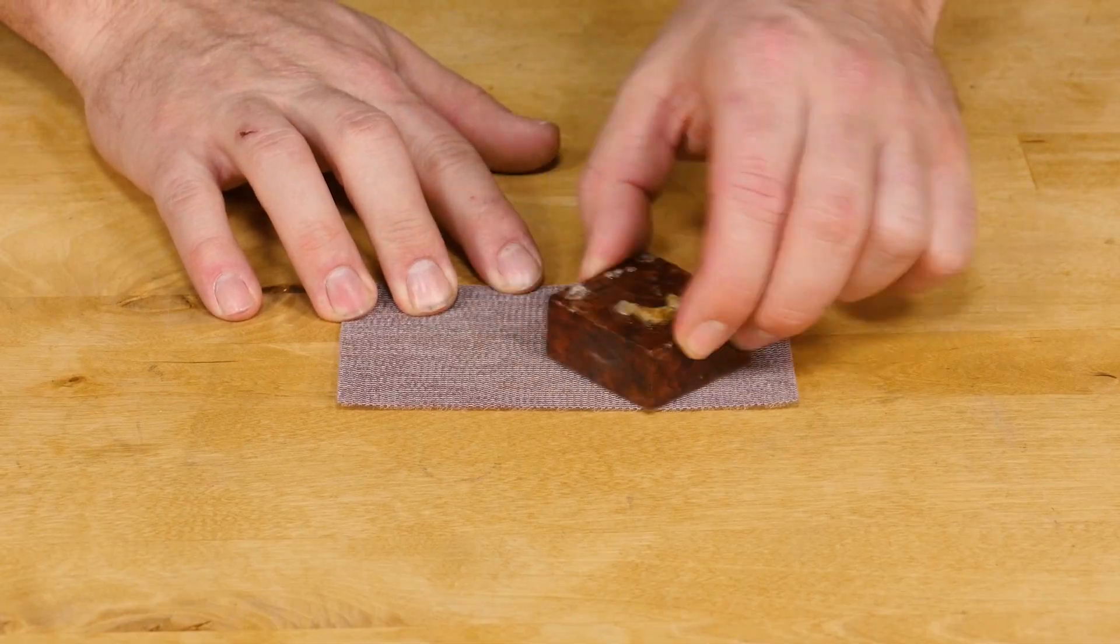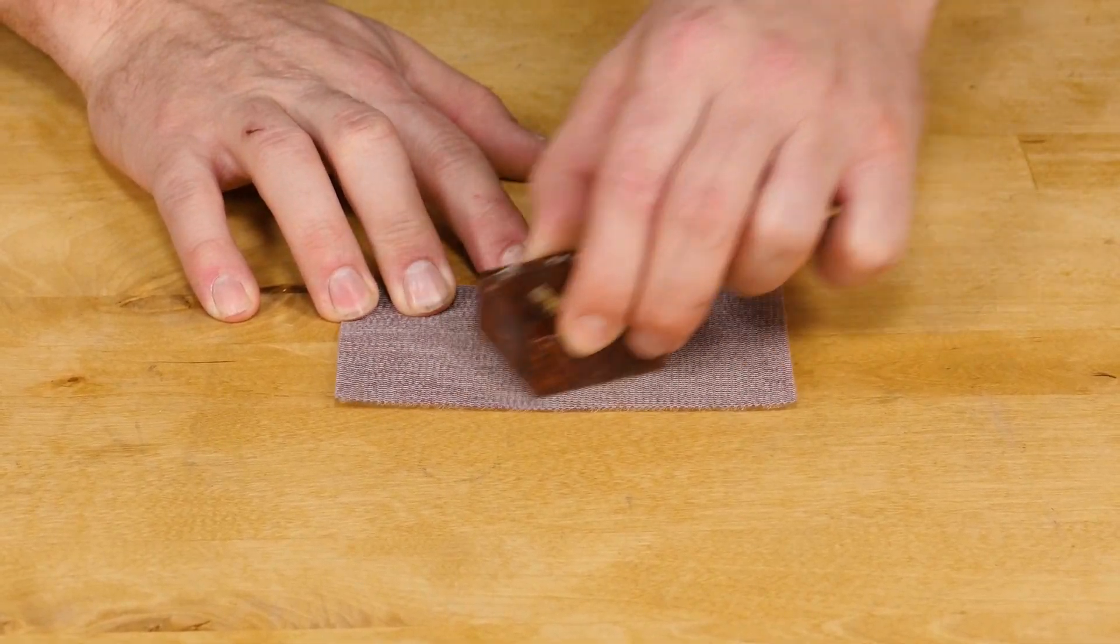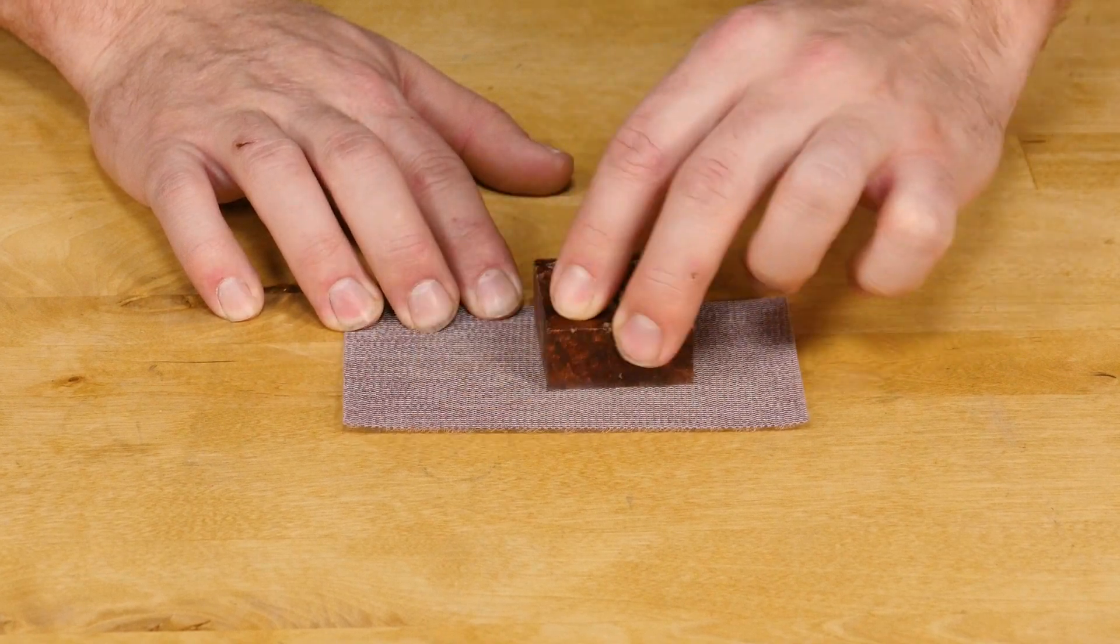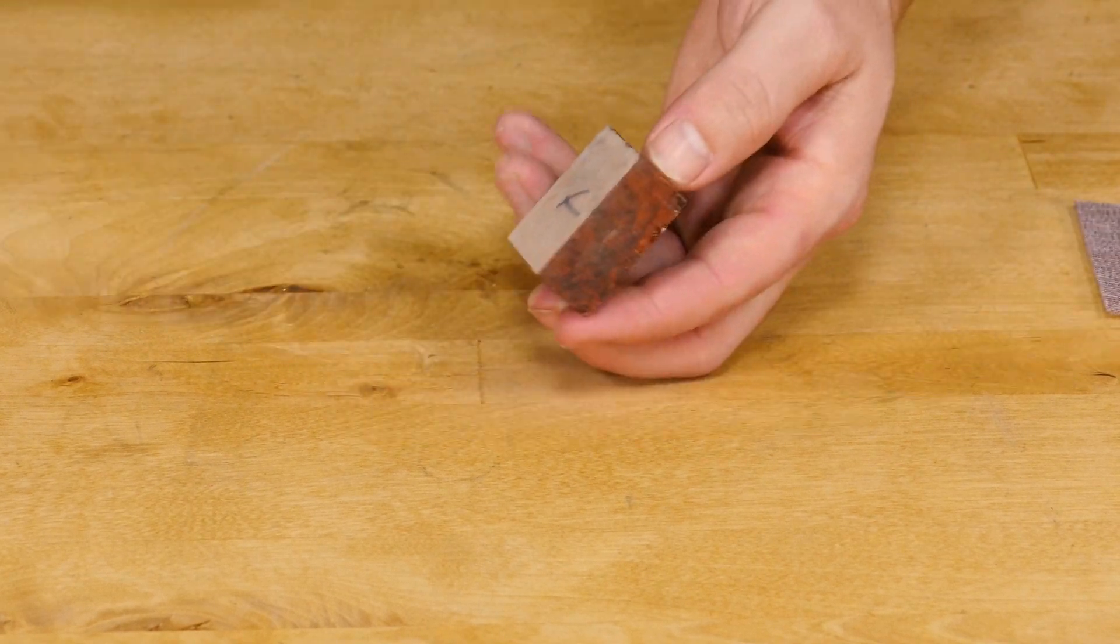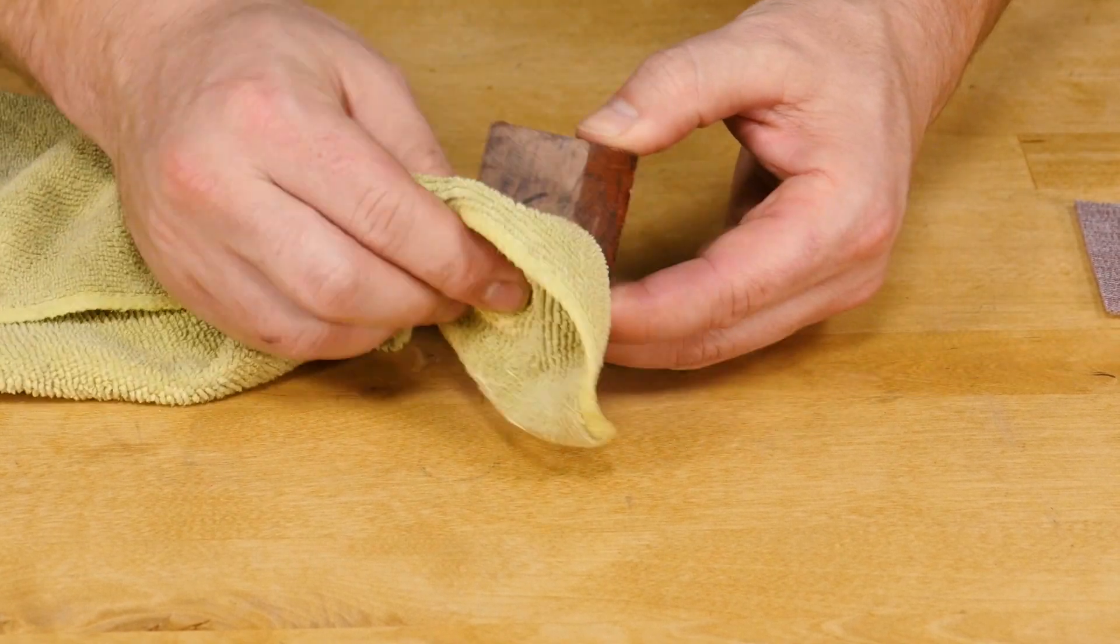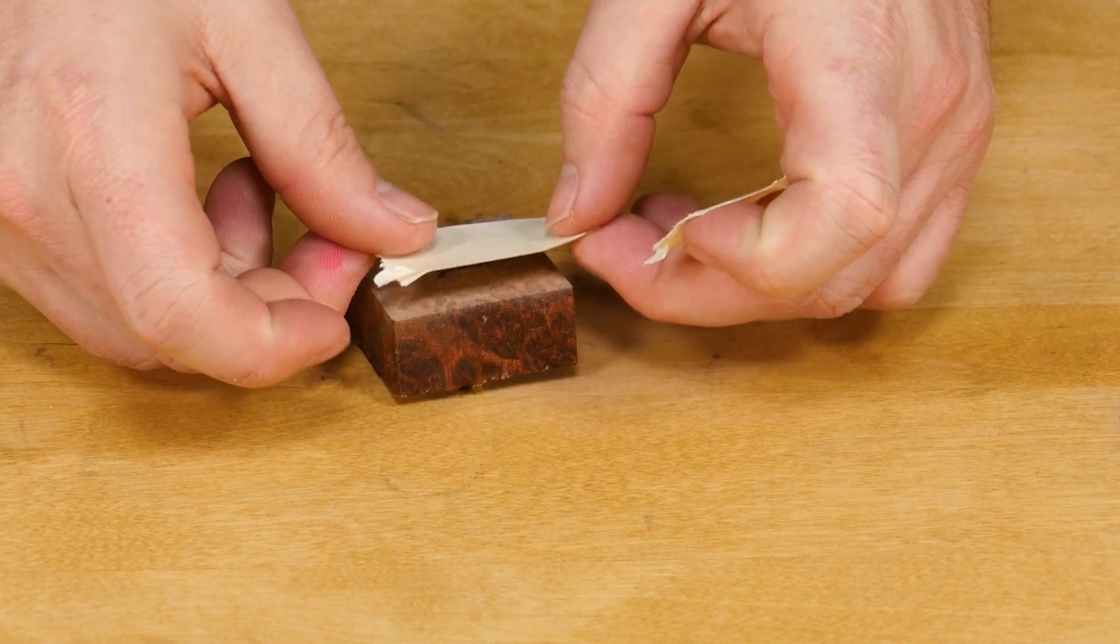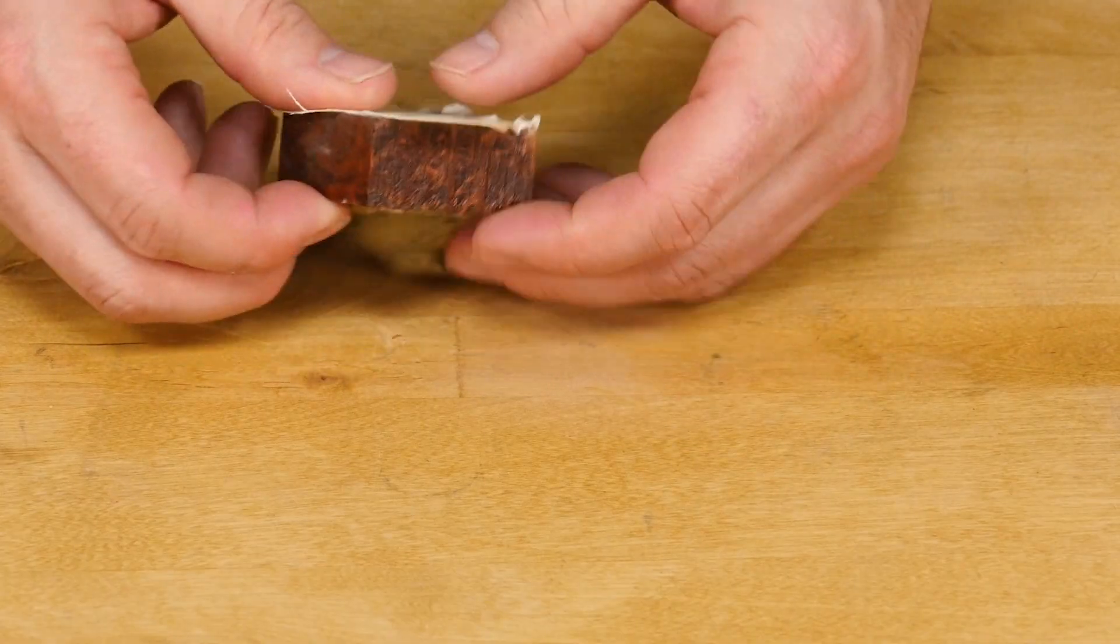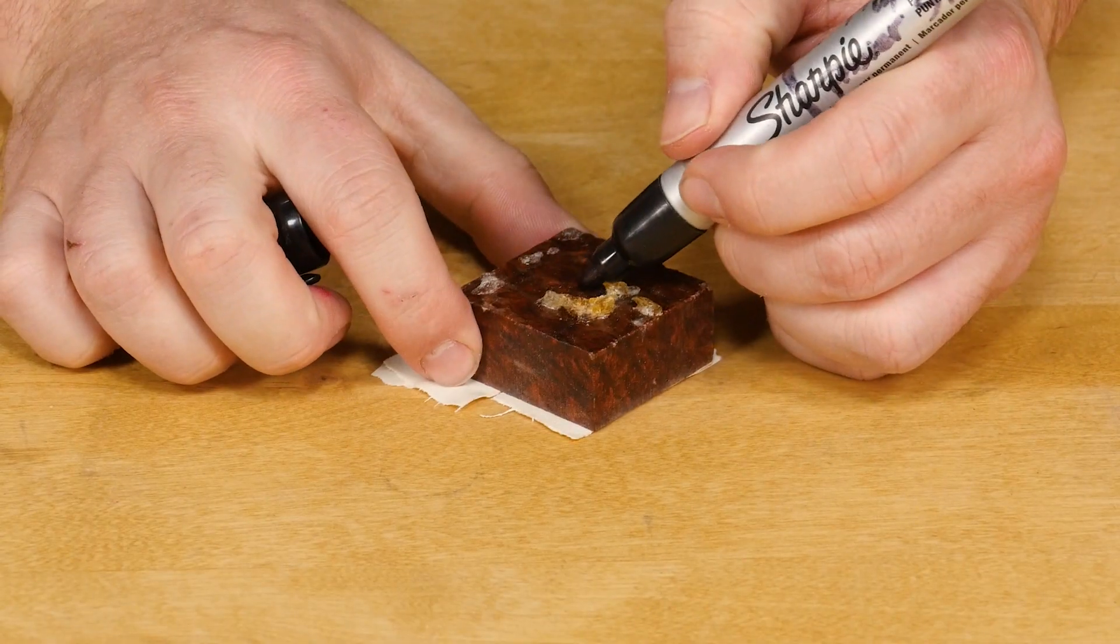Before turning our ring, we need a flat reference face on the blank. Lay some 120 grit sandpaper on a flat surface and make sure one side is sanded totally flat. Once flat, wipe away any dust and apply double-sided tape to the reference face. Then, flip the blank over and mark the center and set the blank aside.